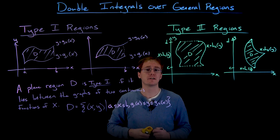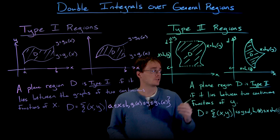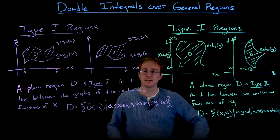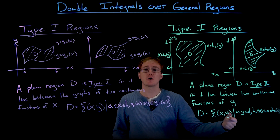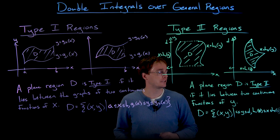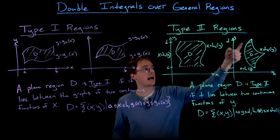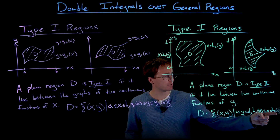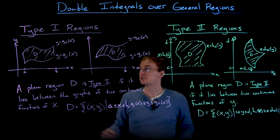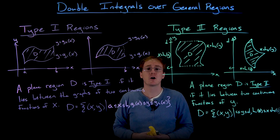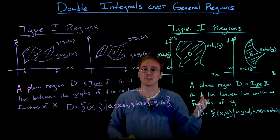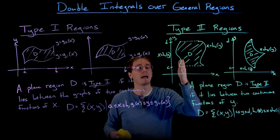The definition for a type 2 region is very similar — the roles of x and y are essentially swapped. A plane region d is a type 2 region if it lies between two continuous functions of y. In set notation, d is the set of points (x, y) such that y is between constants c and d, and x lies between h1 of y (leftmost curve) and h2 of y (rightmost curve). For type 1 we think about top and bottom curves; for type 2 we think about right and left bounding curves.